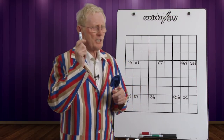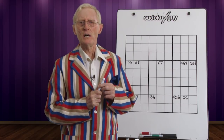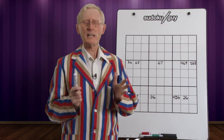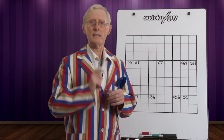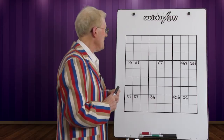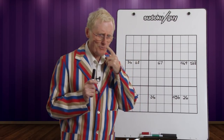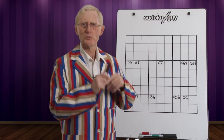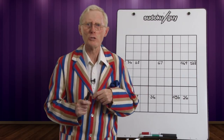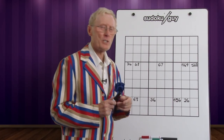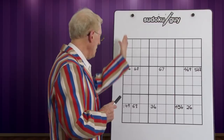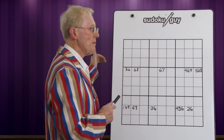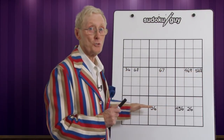The X-Wing is a challenging one because you've got to look for it. Sometimes it can take a while if you're not used to looking for them. The whole idea of the X-Wing is that we're looking for a column, because the column is going to enable us to get rid of numbers in the rows.